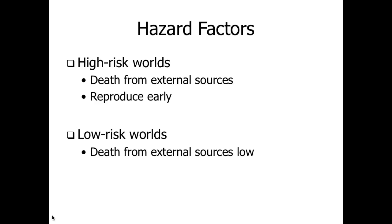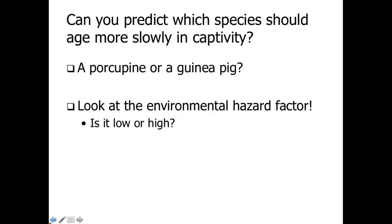With high risk factors, organisms tend to die at a young age, reach sexual maturity early, and reproduce early and often. With low risks and few predators, deaths from external sources are low, aging and sexual maturation are slow, and they don't begin to reproduce until later in life with less frequent and smaller litters. Which would you expect to age more slowly in a zoo — a porcupine or a guinea pig? A porcupine has a smaller number of potential predators and thus will tend to age more slowly and reproduce more slowly even in captivity.